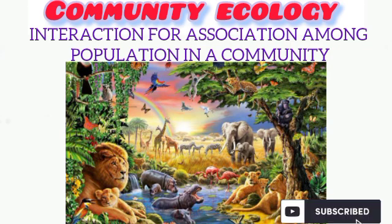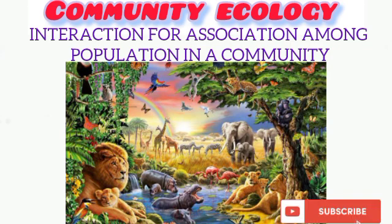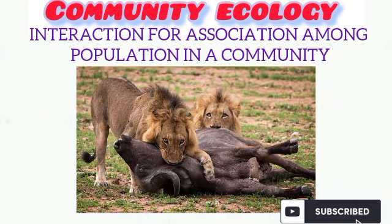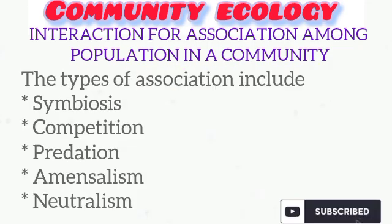Looking at this diagram, you can see that lions can compete among themselves — perhaps for mates or resources — and this kind of association is termed competition. In other cases, the lion may attack its prey, such as a tiger, and that kind of association is termed predation. So we have various kinds of association.